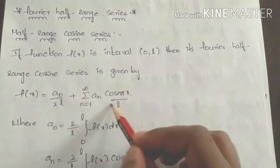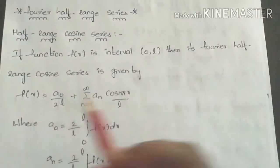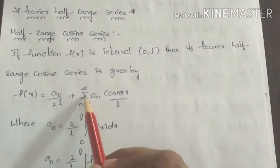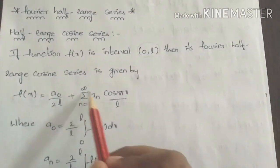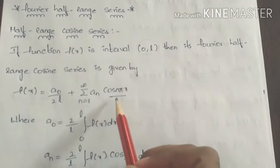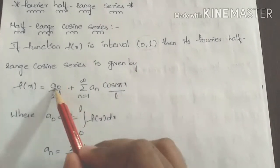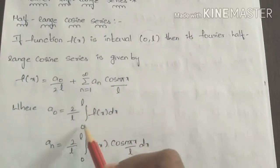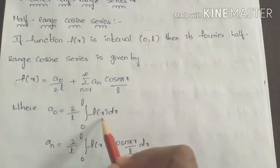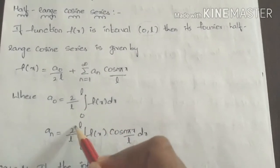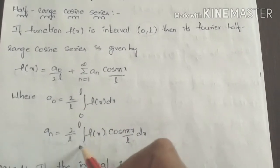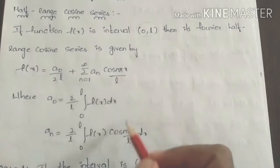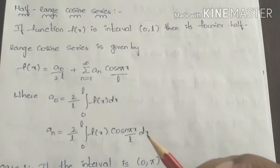The formula is f of x equals a0 by 2 plus summation n equals to 1 to infinity, an cos(n pi x by l). The constant a0 value is 2 by l, integration 0 to l, f of x dx. The constant an value is 2 by l, integration 0 to l, f of x cos(n pi x by l) dx.